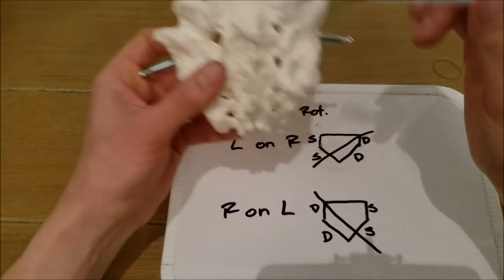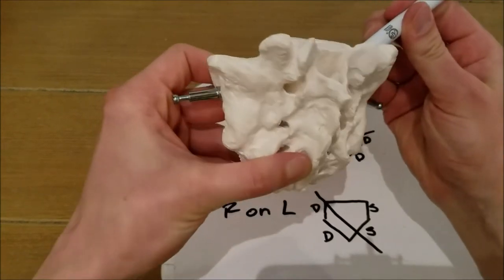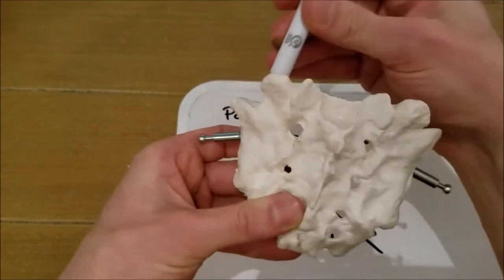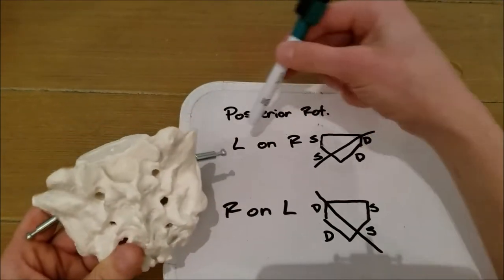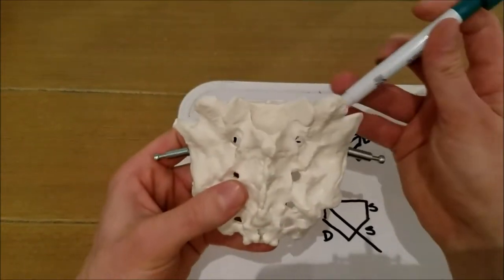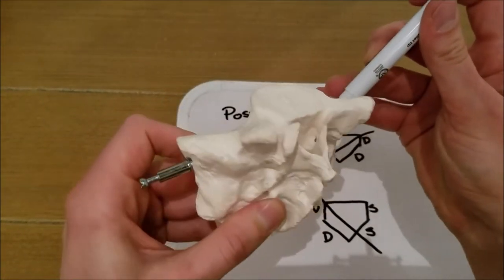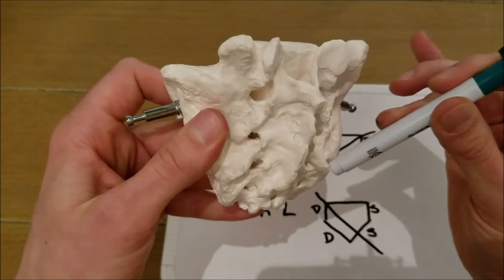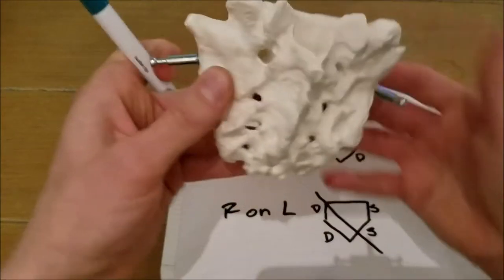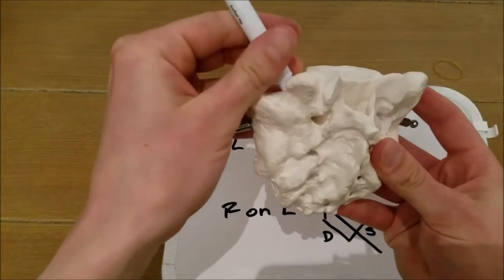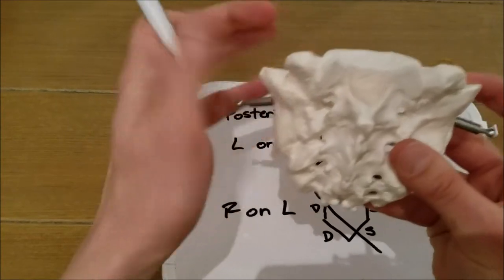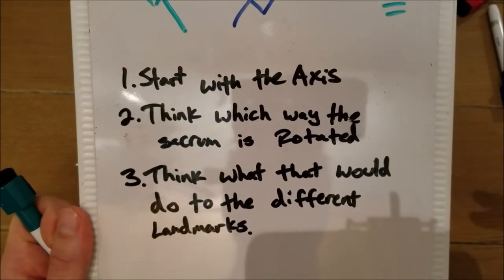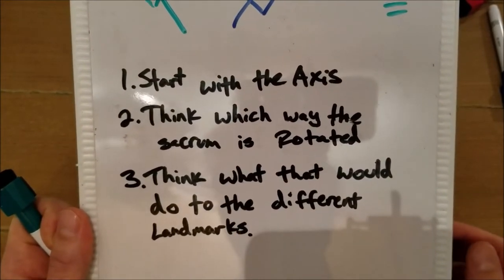Now onto the posterior rotations. These are called posterior rotations because the sacrum rotates posteriorly along an axis. Our first dysfunction is called a left on right — axis is on the right, and it is rotated to the left posteriorly along that axis — giving you shallow landmarks on one side and deep landmarks on the other. Then we have the exact opposite, which is a right on left dysfunction: axis is on the left side, rotated to the right, with deep landmarks on one side and shallow landmarks on the other.